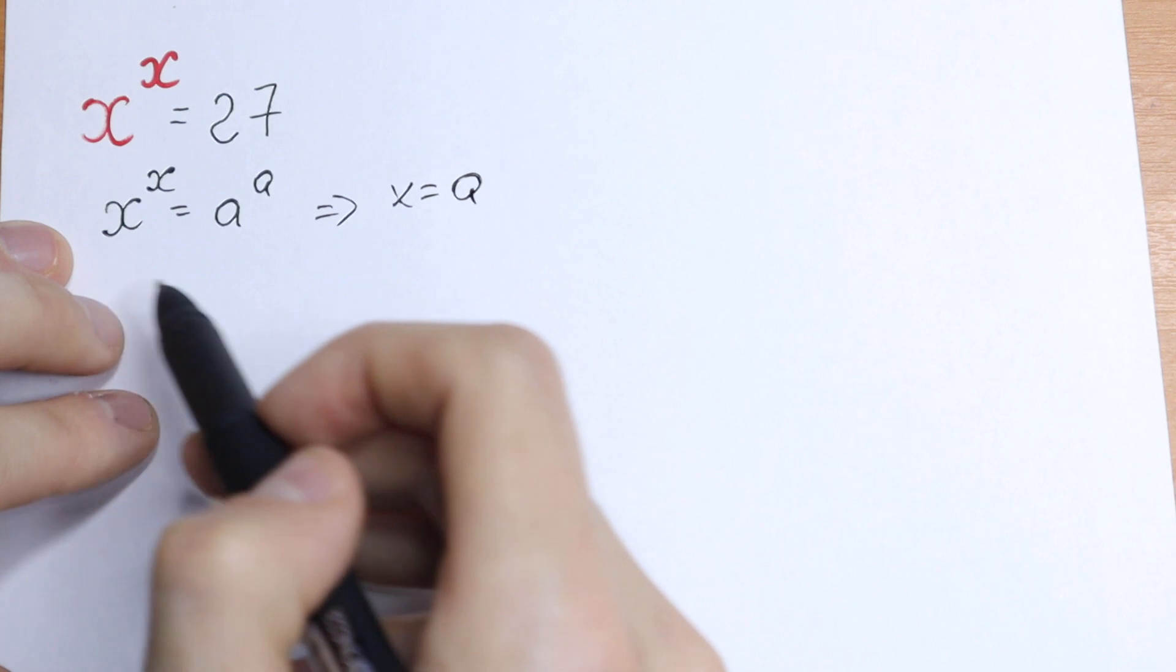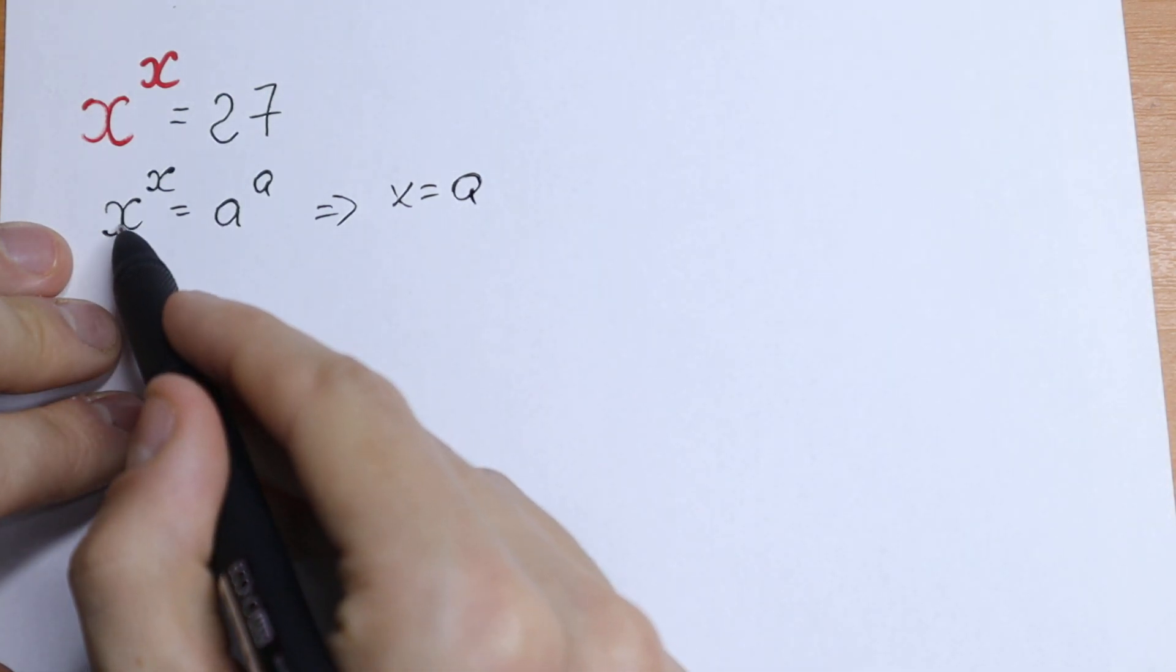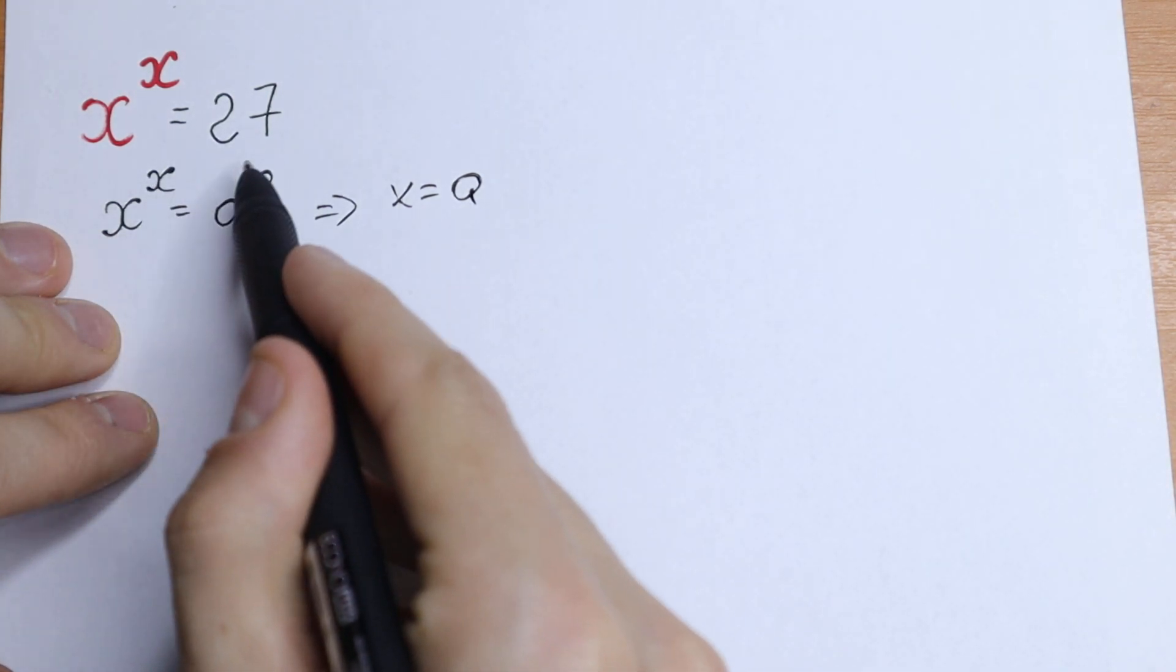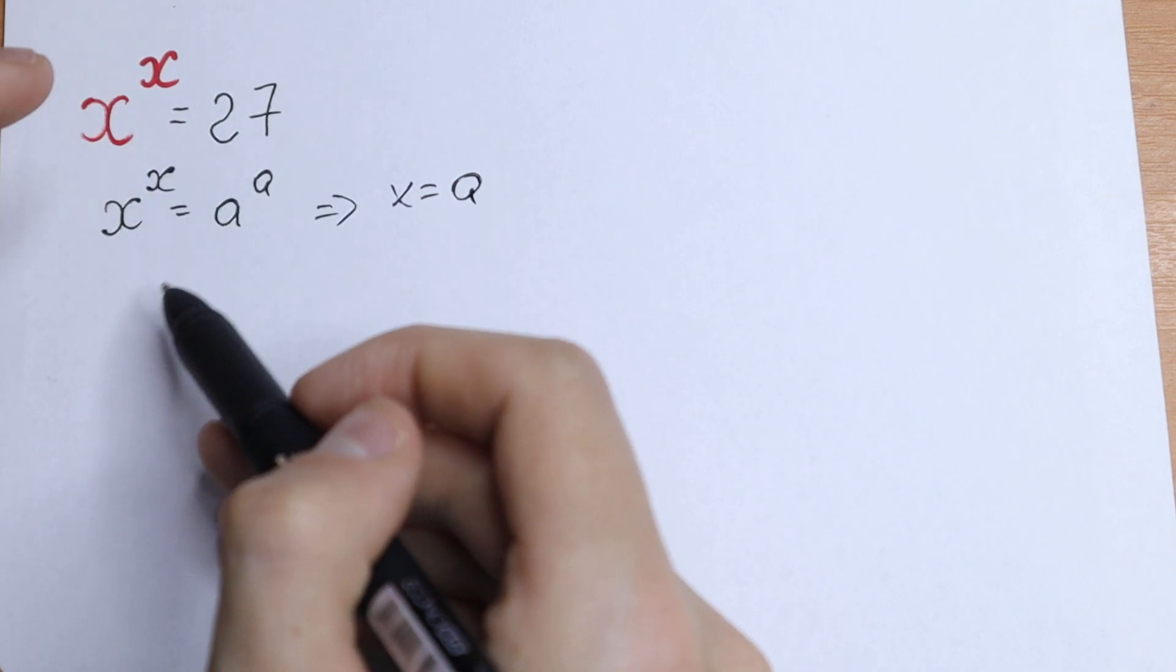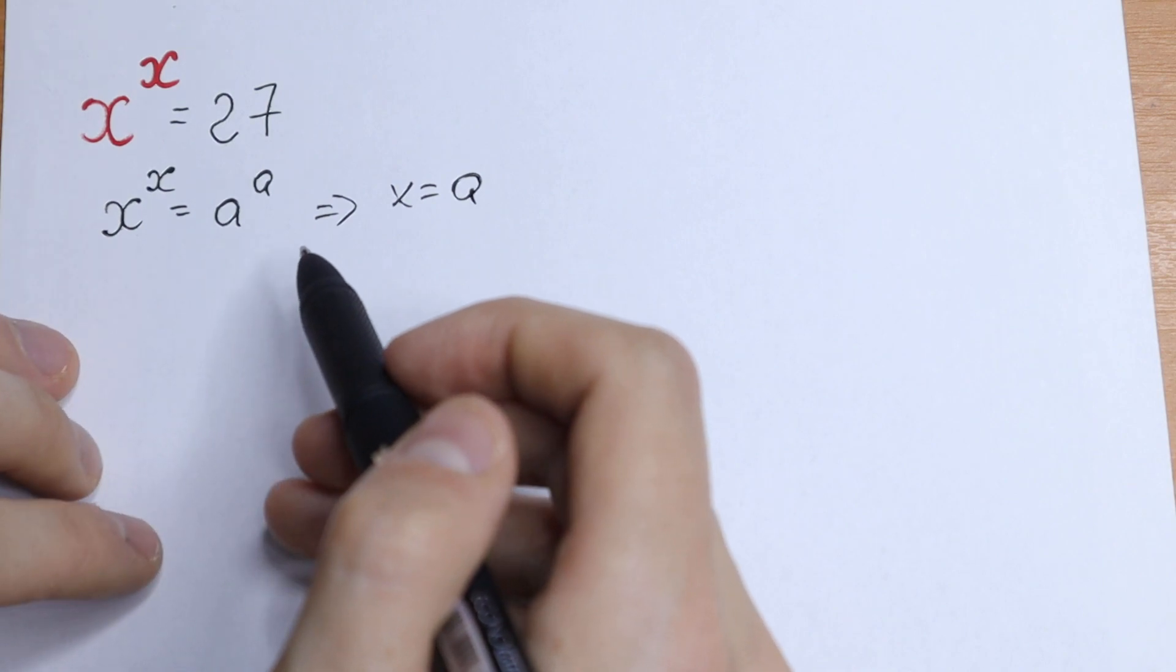So x equals a, meaning the base equals this base and exponent equals this exponent. We need to have same base and same exponent on both sides of the equation.